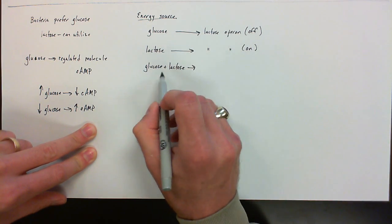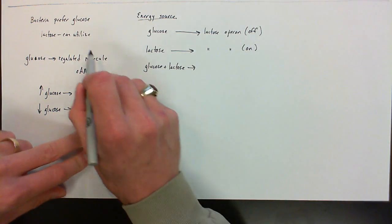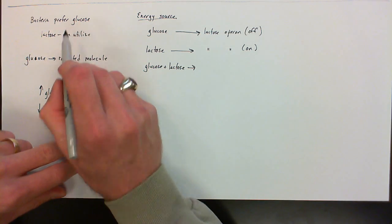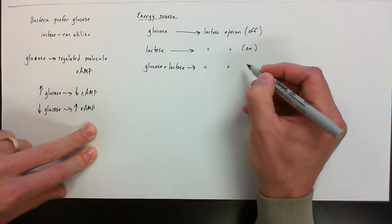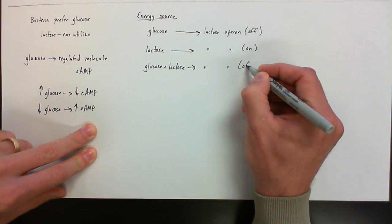Now when there is both glucose and lactose, if you recall back to here, it prefers glucose, we're going to see that the lactose operon is going to be turned off.